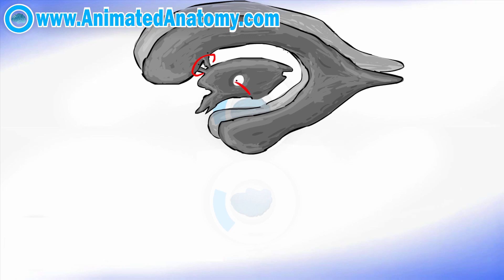Right here you have the interthalamic adhesion that basically connects the two thalami from both sides. And here this is the part of the ventricle that creates the walls of the hypothalamus.